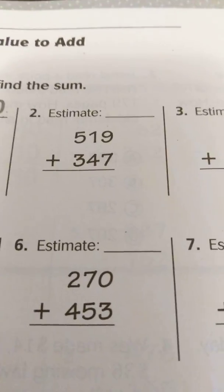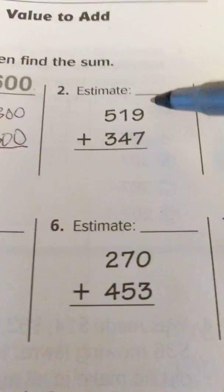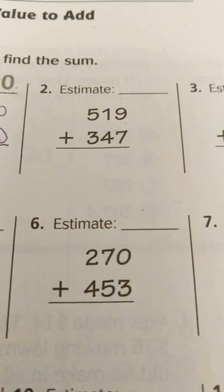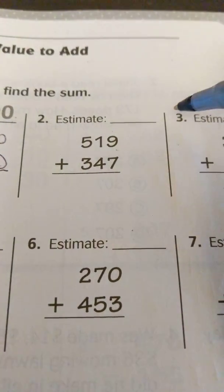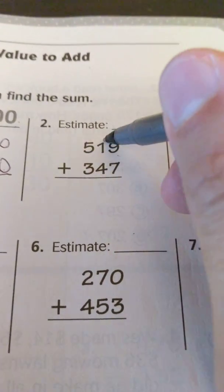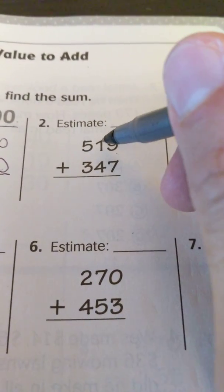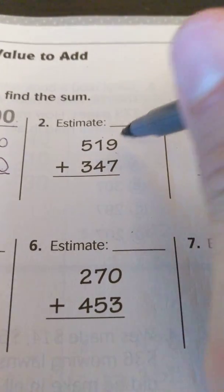On number two we have the number 519, sorry for my camera moving. Again, if I'm rounding to the nearest hundreds I go next door which is at the tens, and we have one ten.